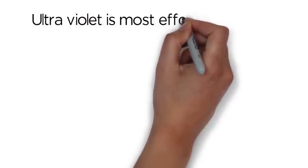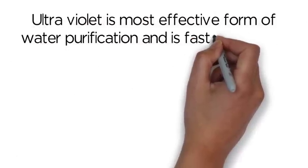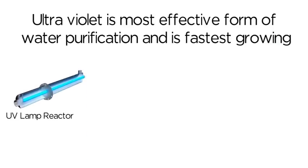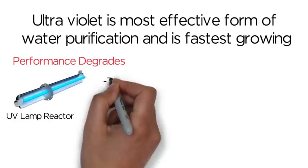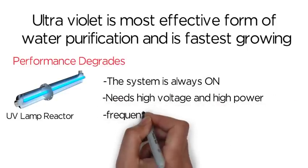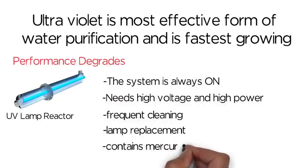Ultraviolet is the most effective form of water purification and is fastest growing, but current UV lamp based systems have other disadvantages. Its performance degrades with use and it is costly due to the system being always on, needs high voltage and high power, frequent cleaning, lamp replacement, and contains mercury.